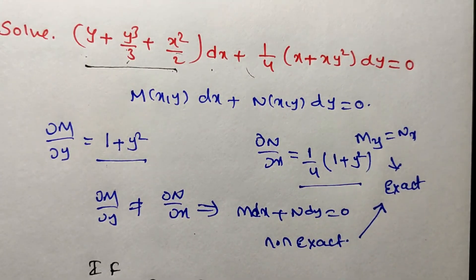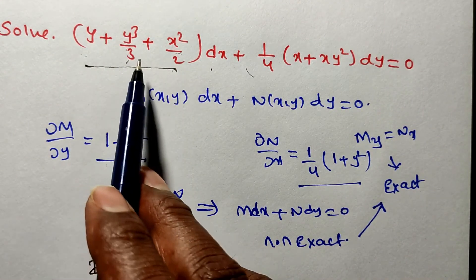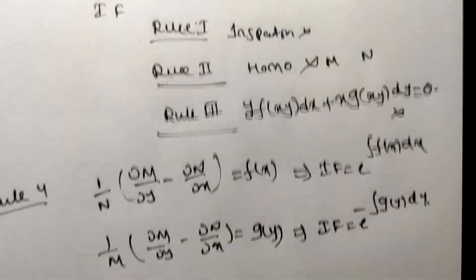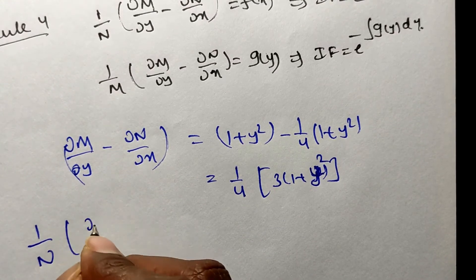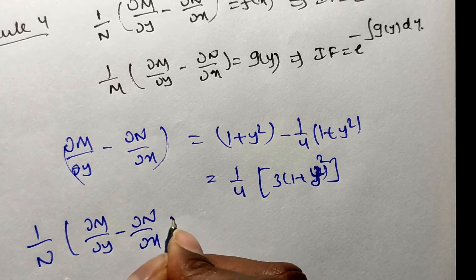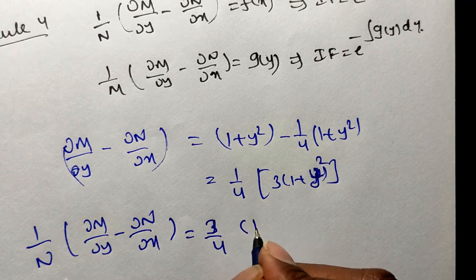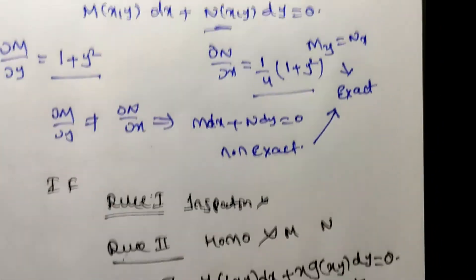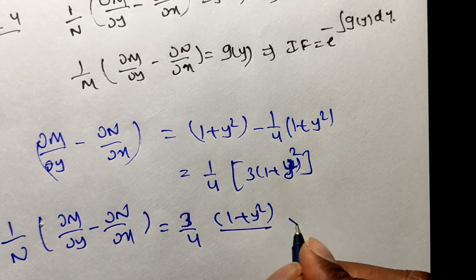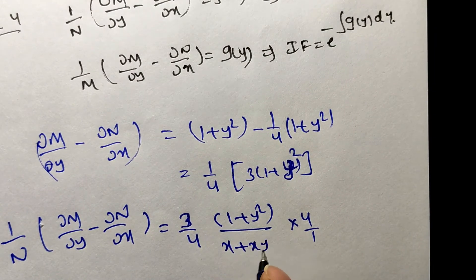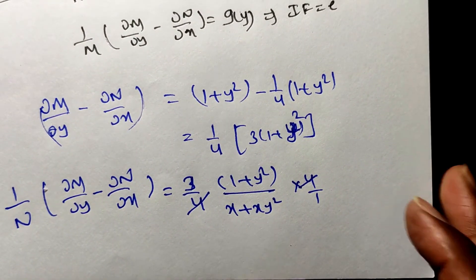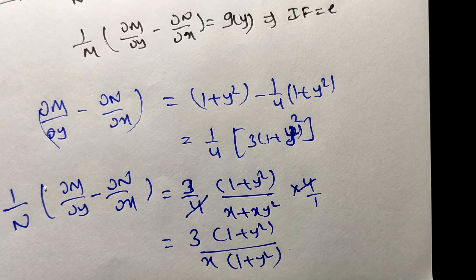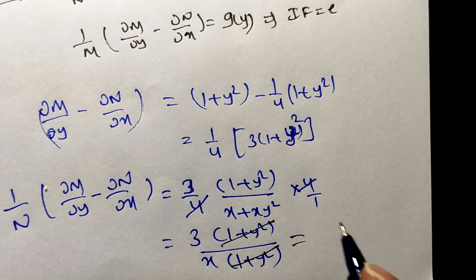Dividing by N: (1/N)(∂M/∂y − ∂N/∂x) = (3/4)(1 + y²) divided by (1/4)(x + xy²). The 1/4 in the denominator becomes 4/1, cancelling the 4 in the numerator. Factor x from the denominator: x(1 + y²). The (1 + y²) in the numerator and denominator cancel, leaving 3/x. This is a function of x alone, confirming Rule 4 applies with f(x) = 3/x.